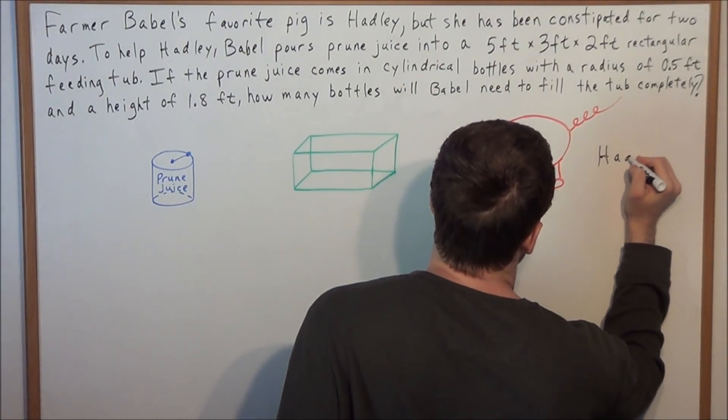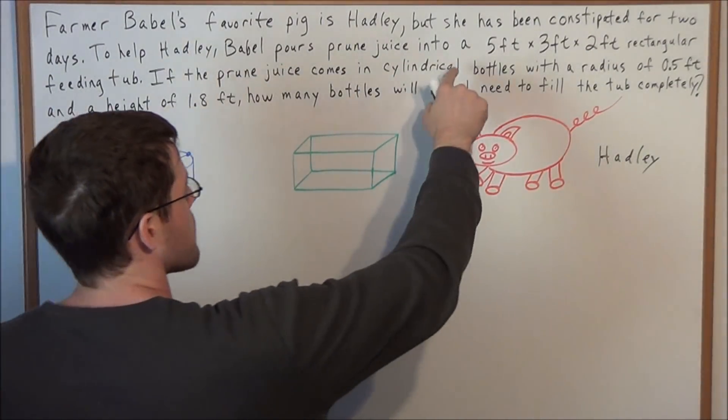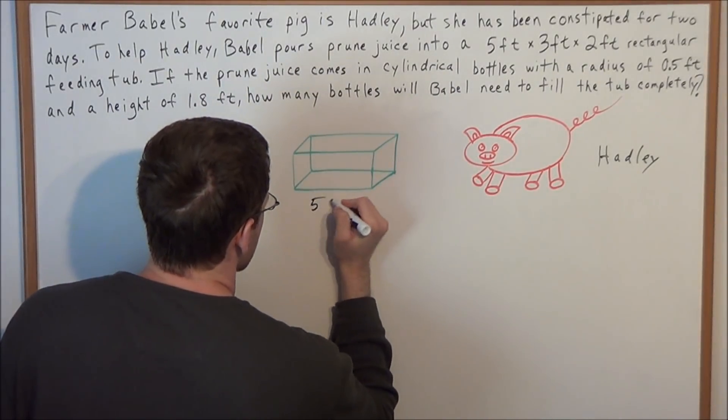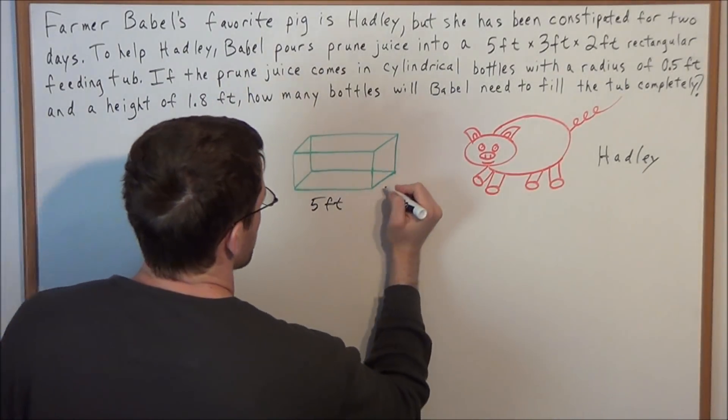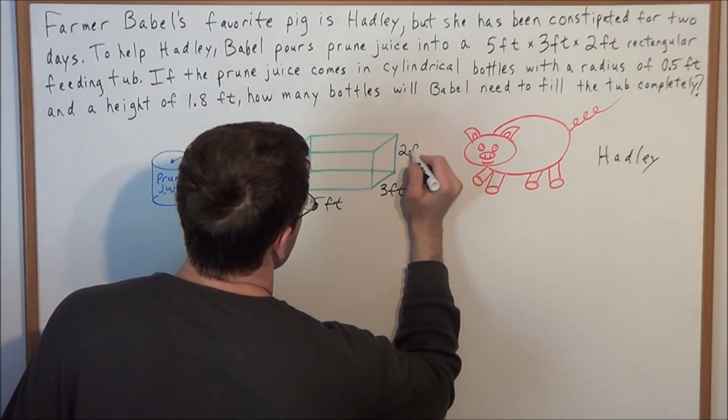And we have this rectangular feeding tub has dimensions of 5 by 3 by 2 feet. So we could label the length of this tub to be 5 feet, we could label the width to be 3 feet, and finally we could label the height to be 2 feet.